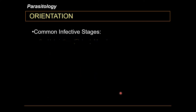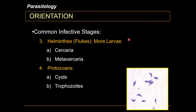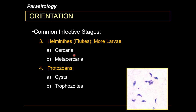Flukes infect humans with special types of larvae: the cercaria and the metacercaria. When you encounter flukes or trematodes, identify whether the infective larvae is the cercaria stage or the metacercaria stage. The cercaria will eventually develop into a metacercaria, but different parasites use one stage or the other as their infective stage.